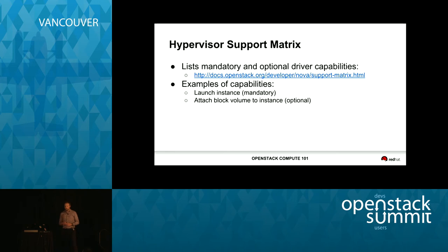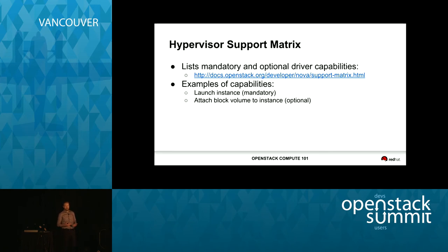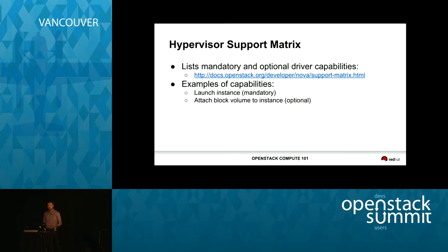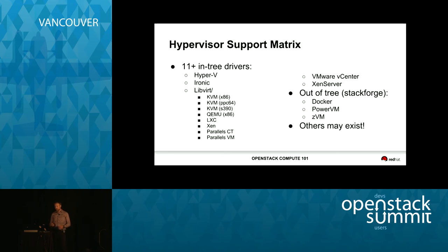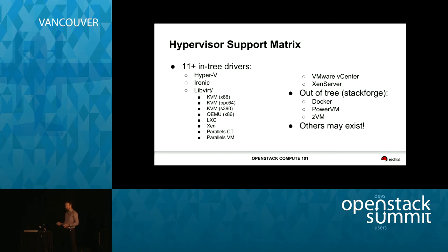We also have the hypervisor support matrix, which lists mandatory and optional driver capabilities. We have a wide range of technologies — virtual machines, containers, and bare metal — supported by Nova, and not all actions the Nova API supports make sense for all drivers. So some actions are optional. Launching an instance is mandatory, but attaching a block volume is optional. There are 11-plus in-tree drivers, including various incantations of the libvirt driver for different architectures and platforms. There are also out-of-tree drivers on StackForge — such as the Nova Docker driver — and others may exist in vendor repositories.